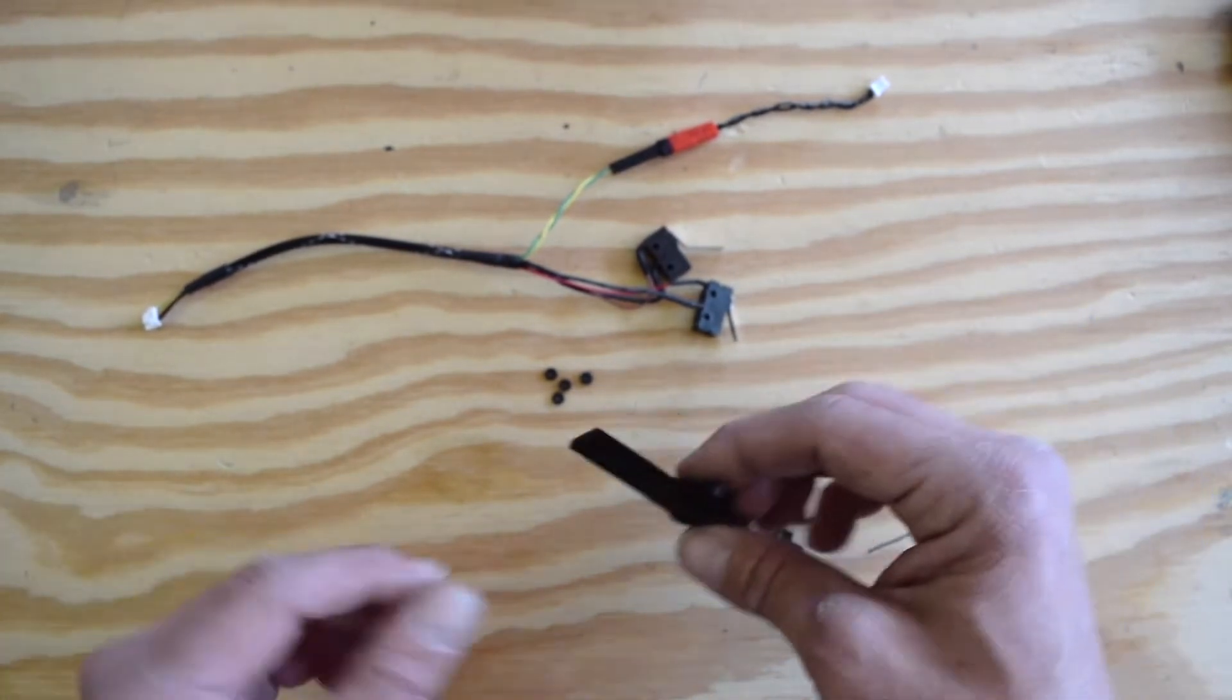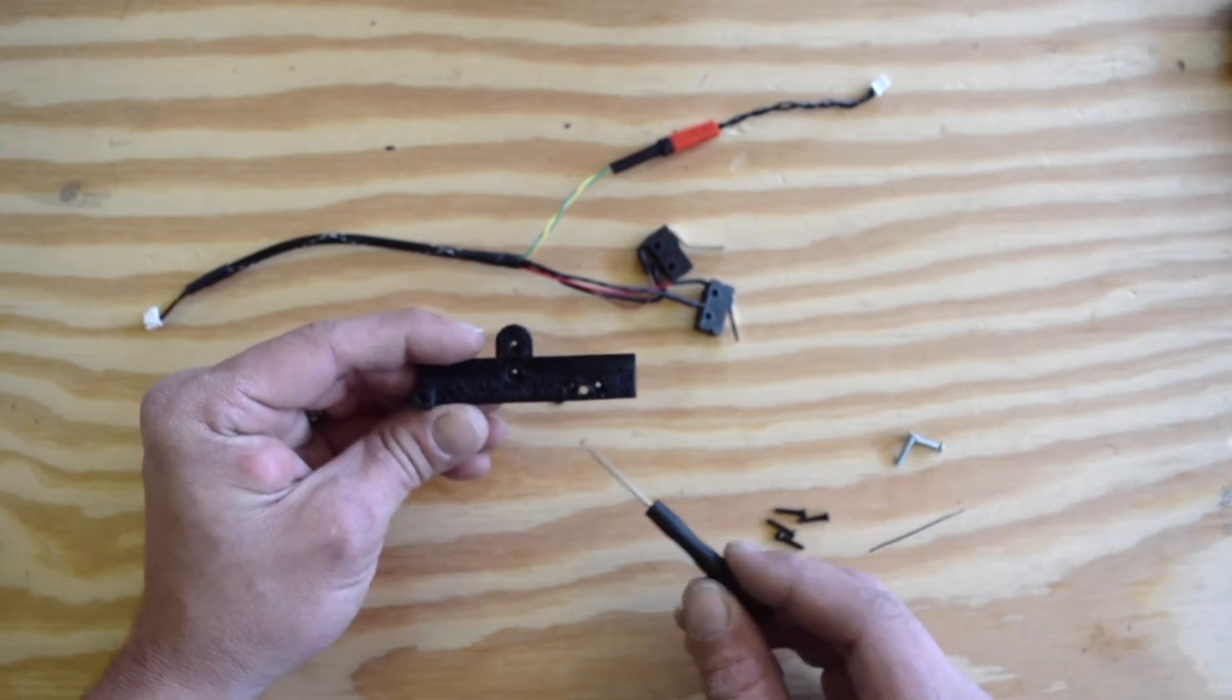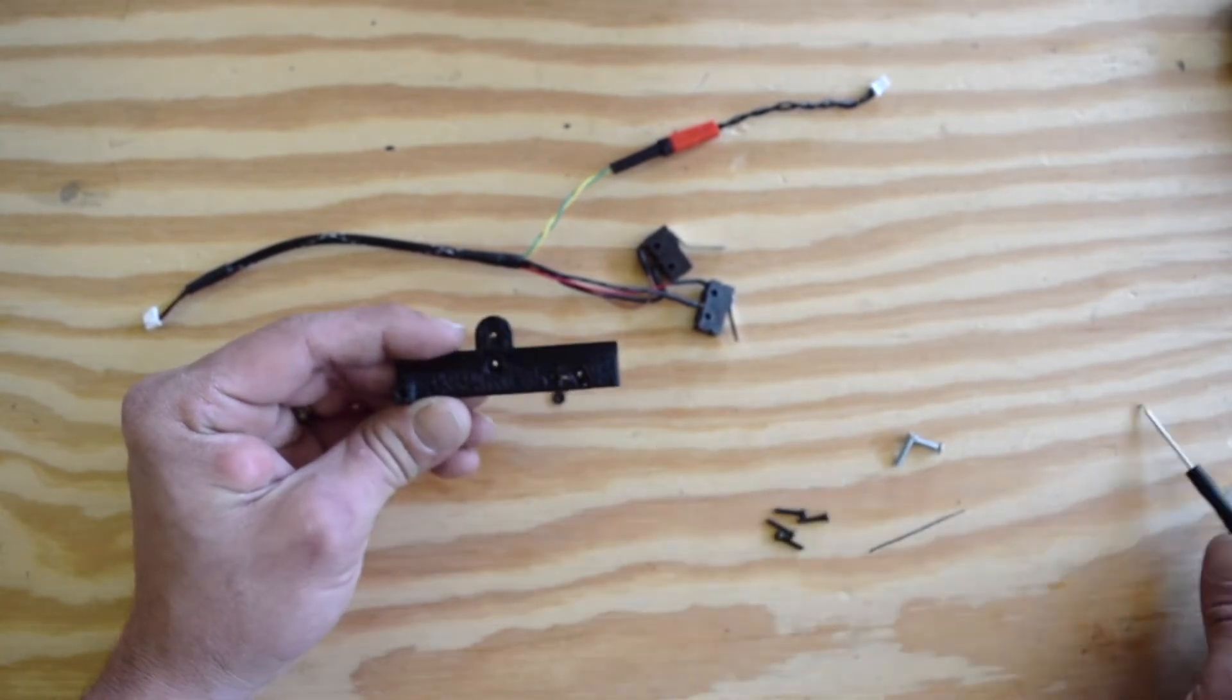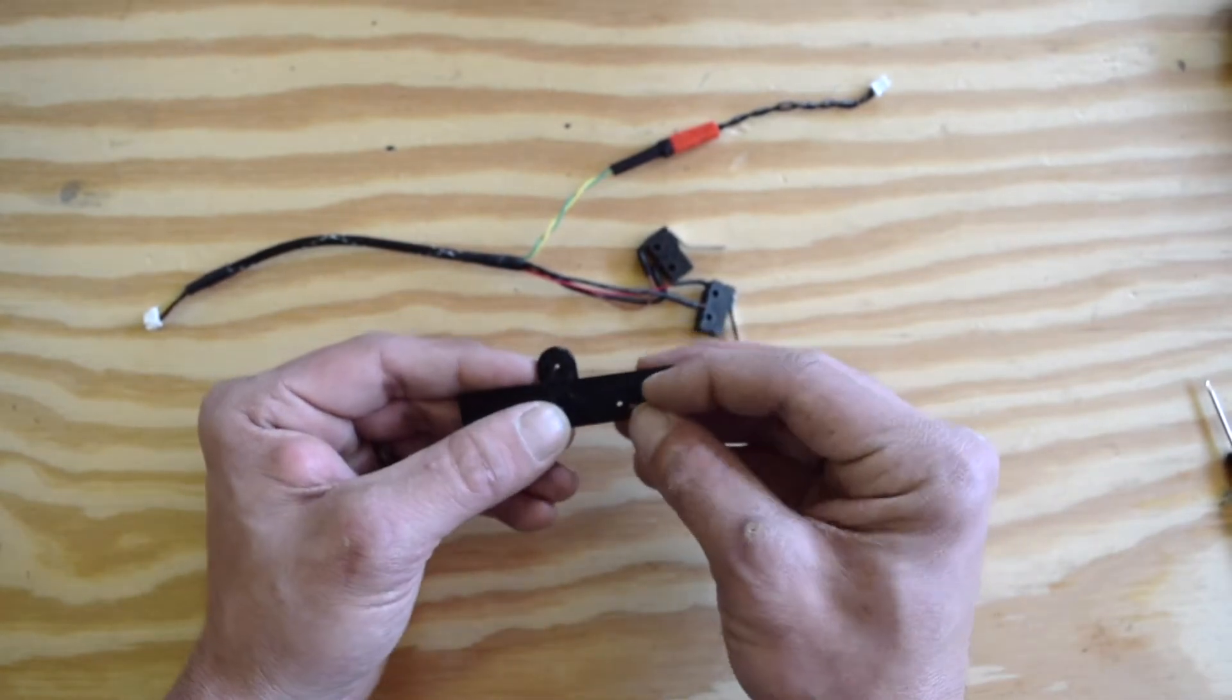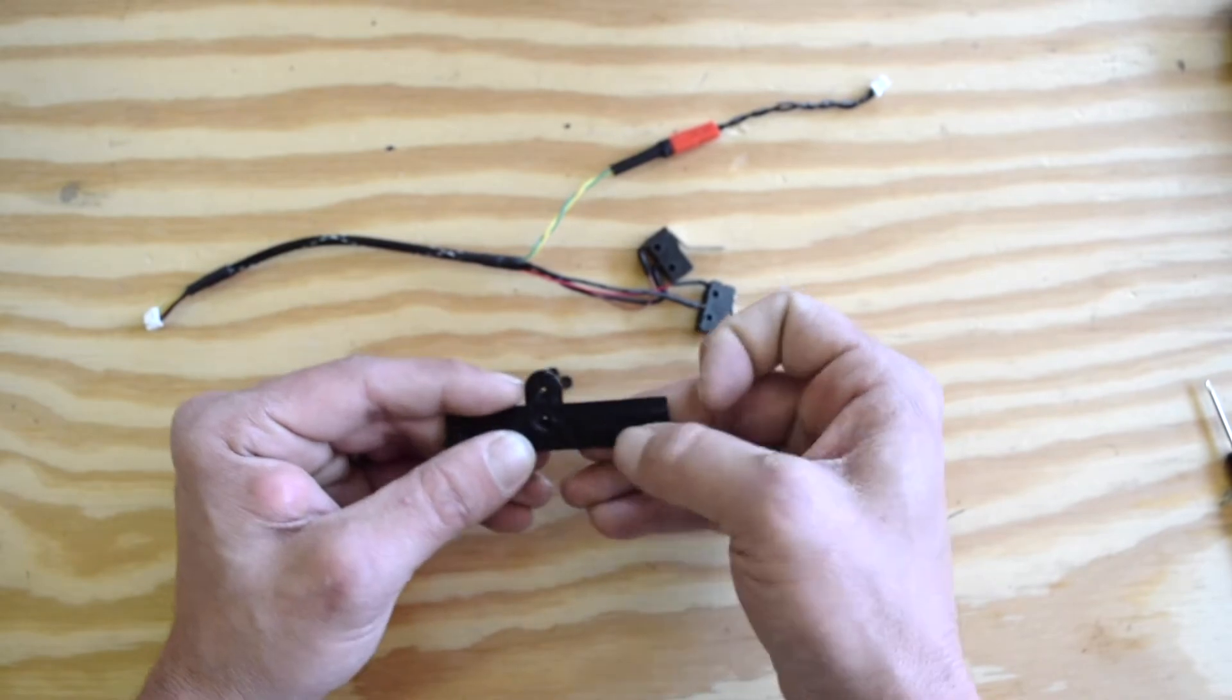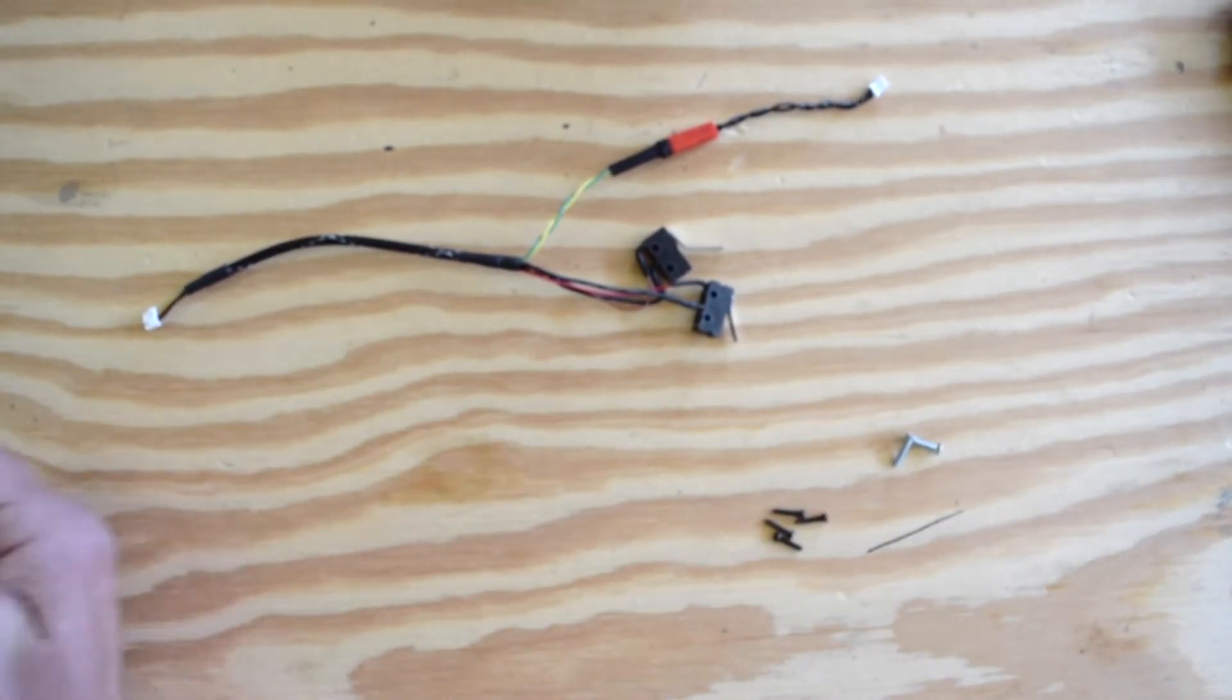To get started, first we want to flip the bracket over. And you will see there are four recessed holes. These are for the hex nuts. They're just press fit, so you just line them up and then press them down in nice and secure, just like that. Now I've already done the other two, so we can just set these nuts aside.